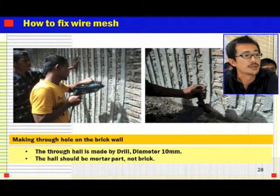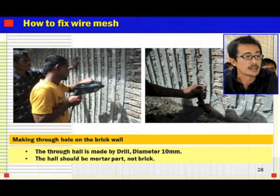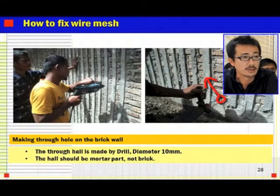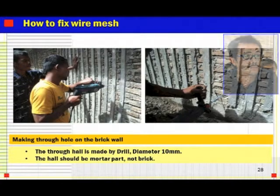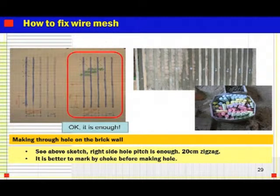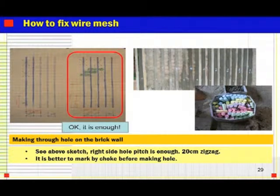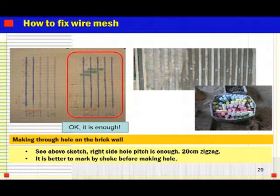Making through-holes on the brick wall: the through-hole is made by drill with 10mm diameter. The hole should be in the mortar part, not in the brick, because Indonesian brick is very brittle and weak — so it is better to make the hole in the joint mortar. There are two types shown in the sketch. The hole pitch should follow the guidebook: 20cm zigzag. It is better to mark with chalk before making the holes.